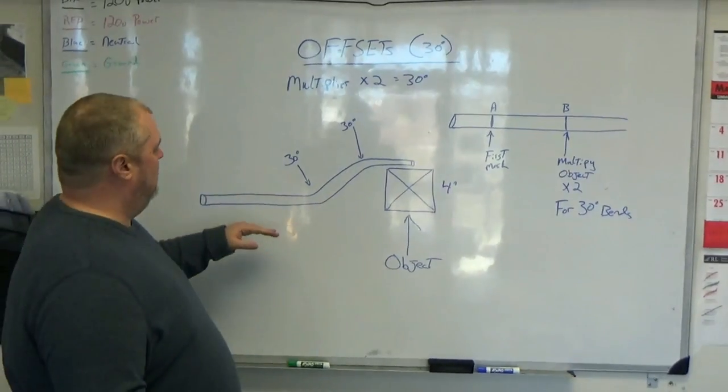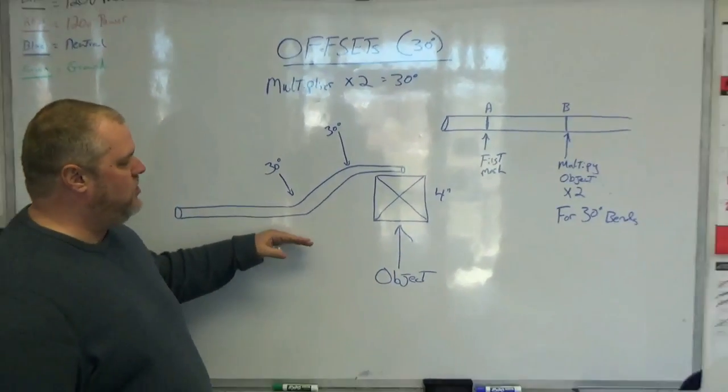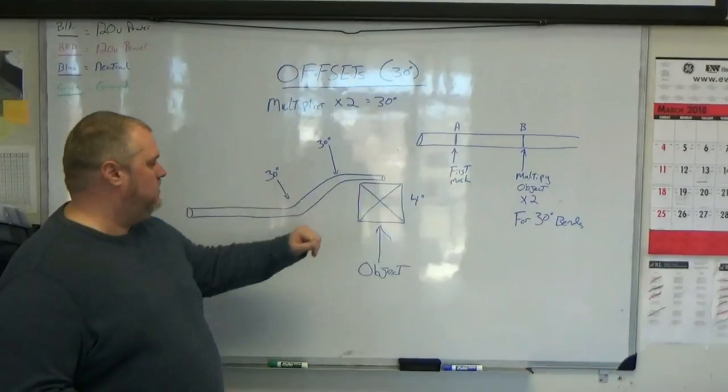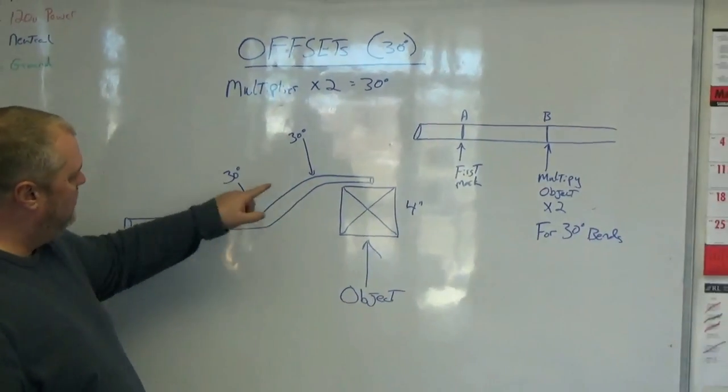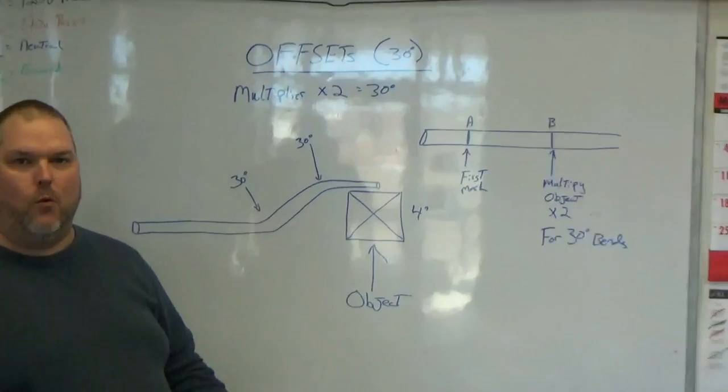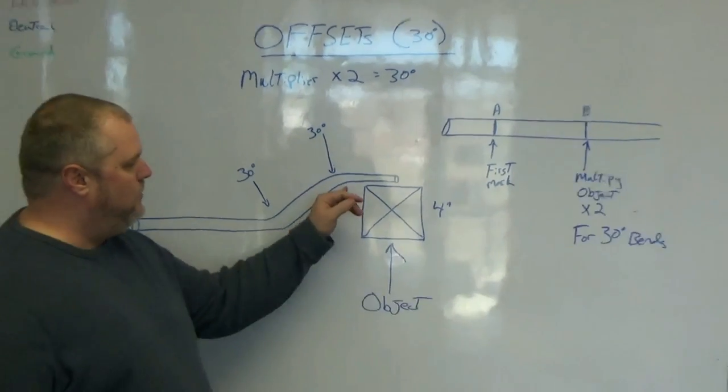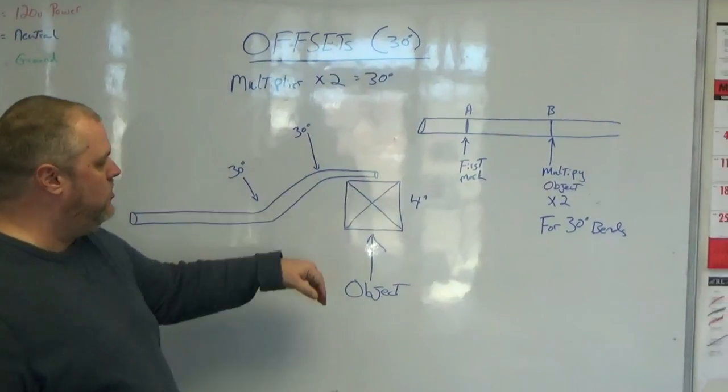30 degree offset, so what we're trying to do is we're trying to change directions, we're going over an object. An offset looks like so, with two 30 degree bends, unlike your 90s where you're only bending one, you're going to actually bend two to change directions.